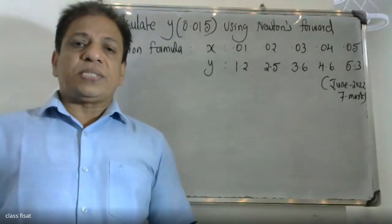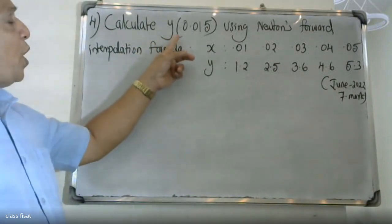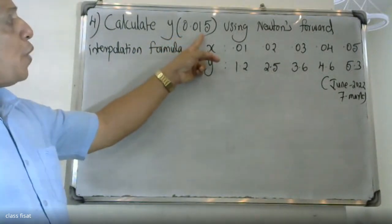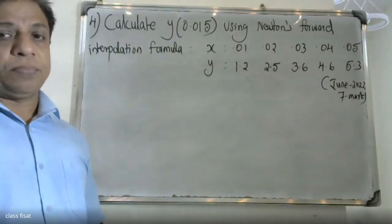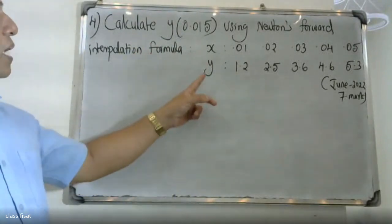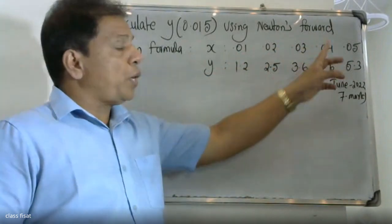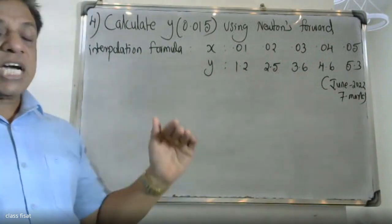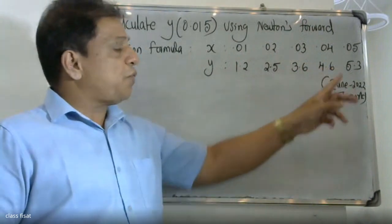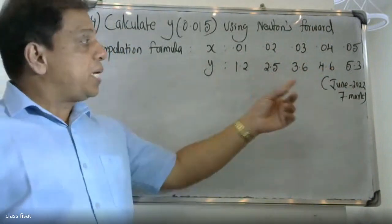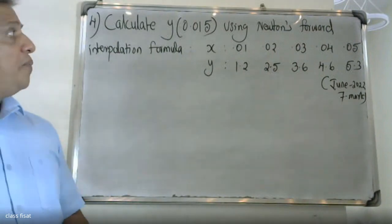Good morning students. Calculate y of 0.015 using Newton's forward interpolation formula, where x values are 0.01, 0.02, 0.03, 0.04, 0.05 and the corresponding y values are 1.2, 2.5, 3.6, 4.6, 5.3. This is an 8-mark question.